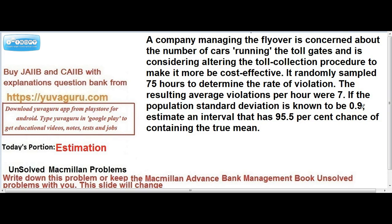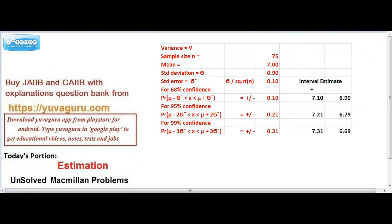The resulting average per hour was seven cars. If the population standard deviation is 0.9, that means seven cars per hour are going without paying the toll, and the standard deviation is 0.9 — so roughly seven plus or minus 0.9. We have to find the standard error from this. The given data: n equals 75, mean is seven, and standard deviation is 0.9.